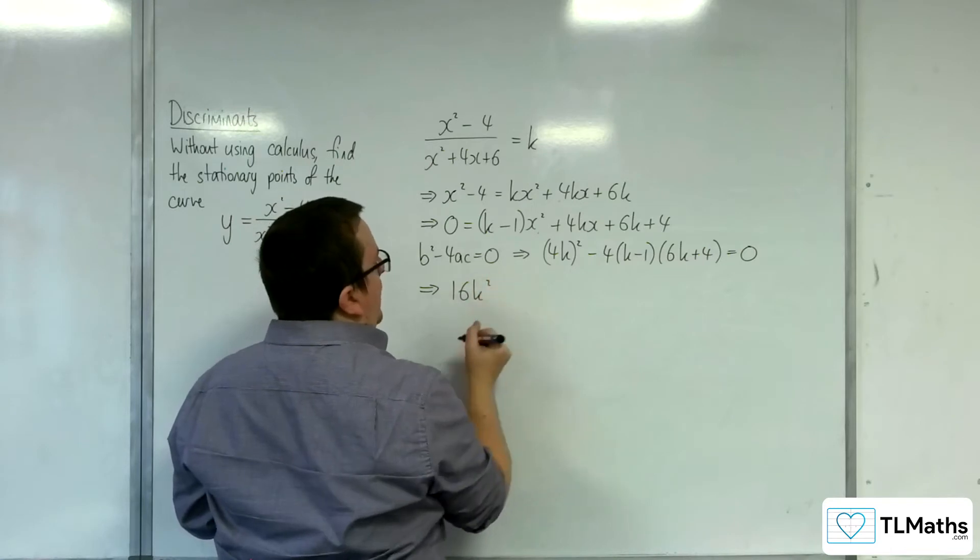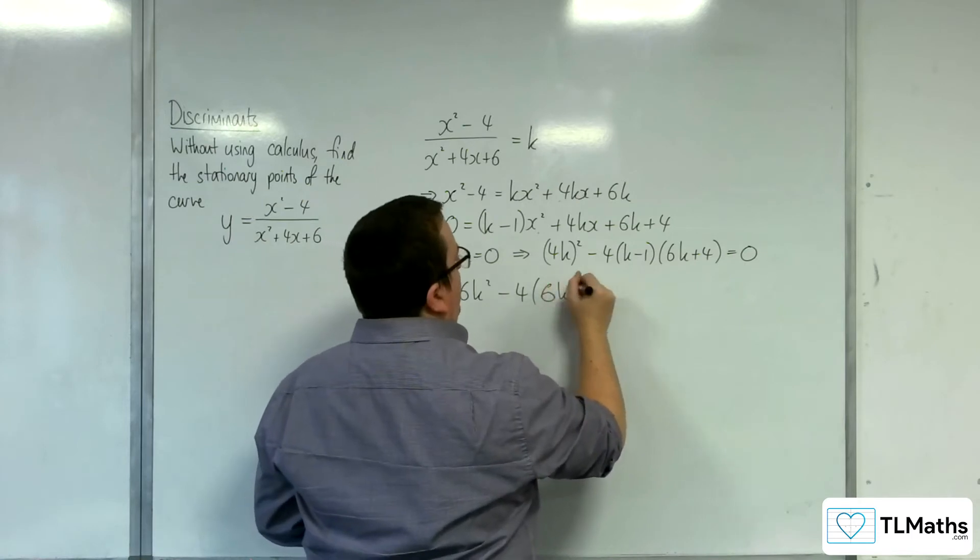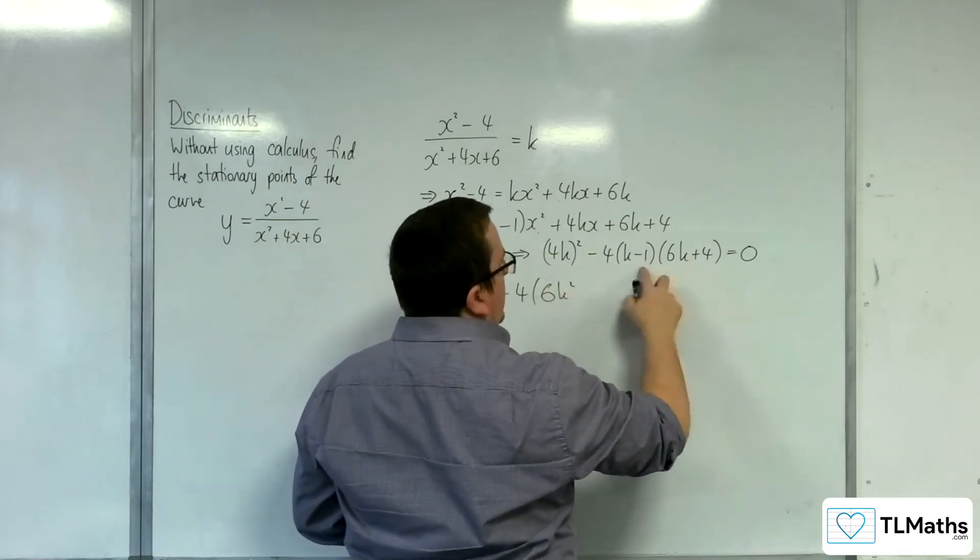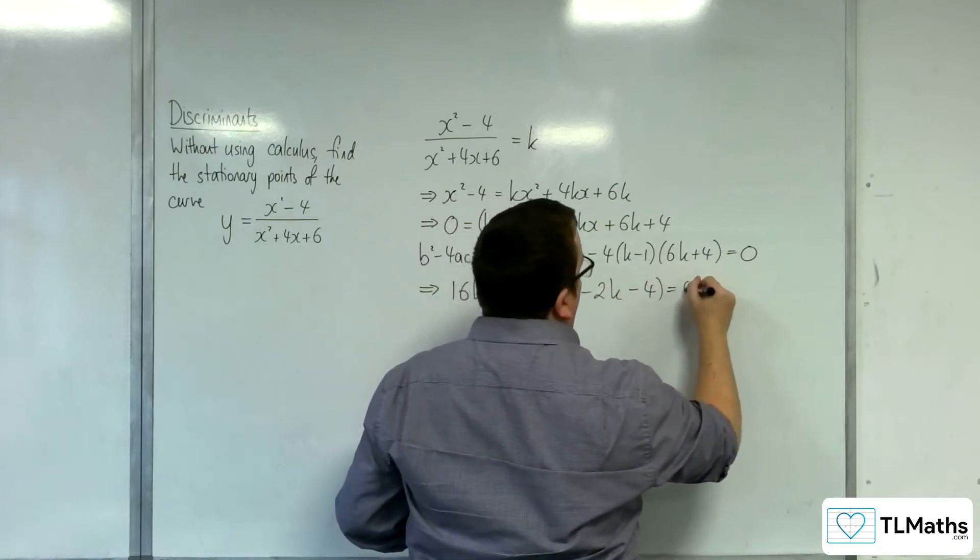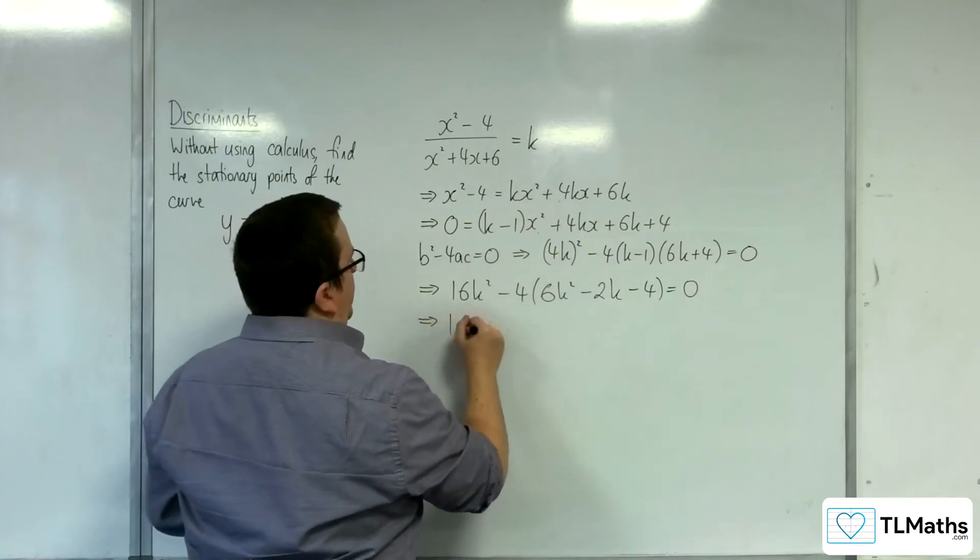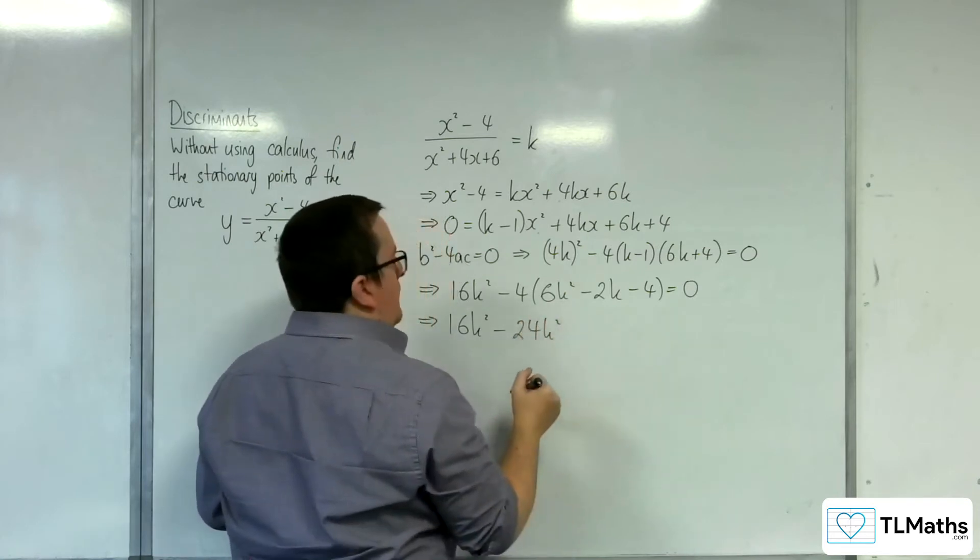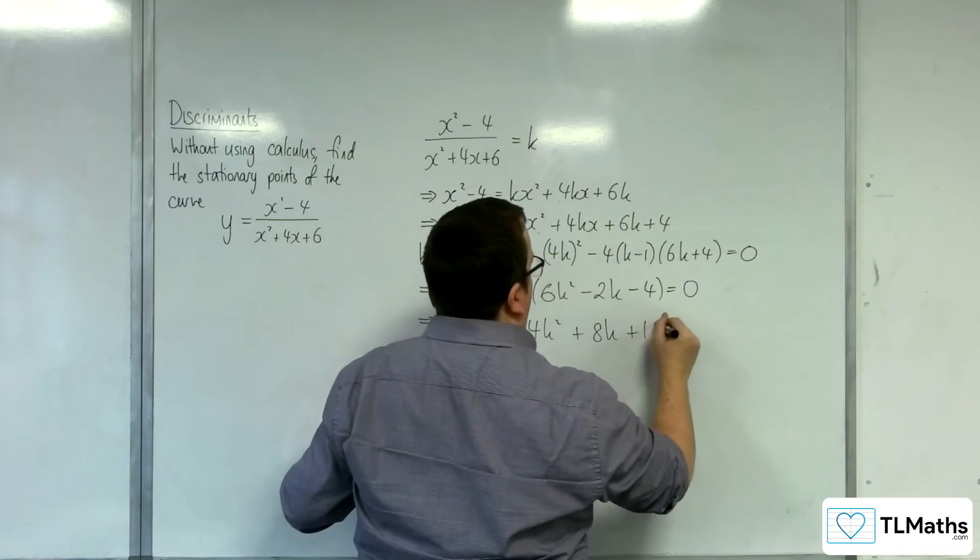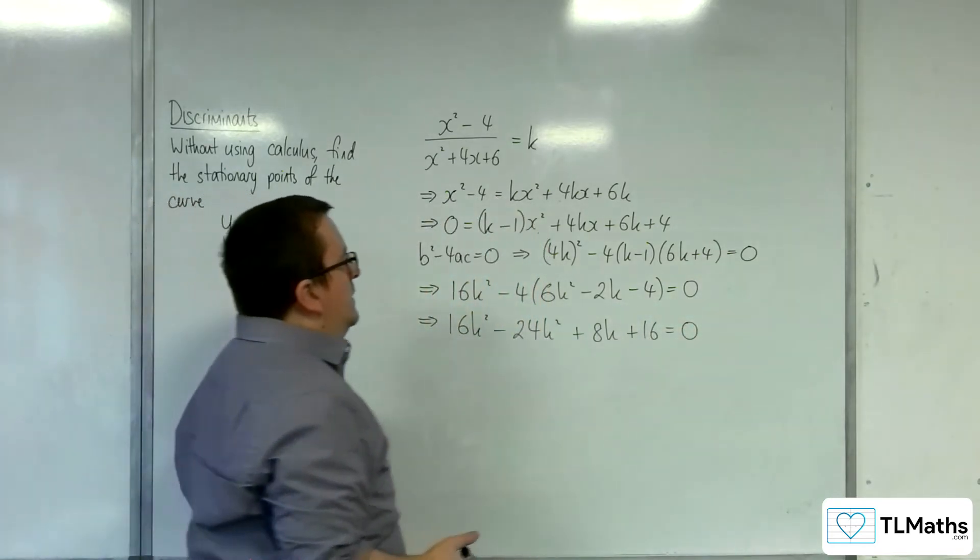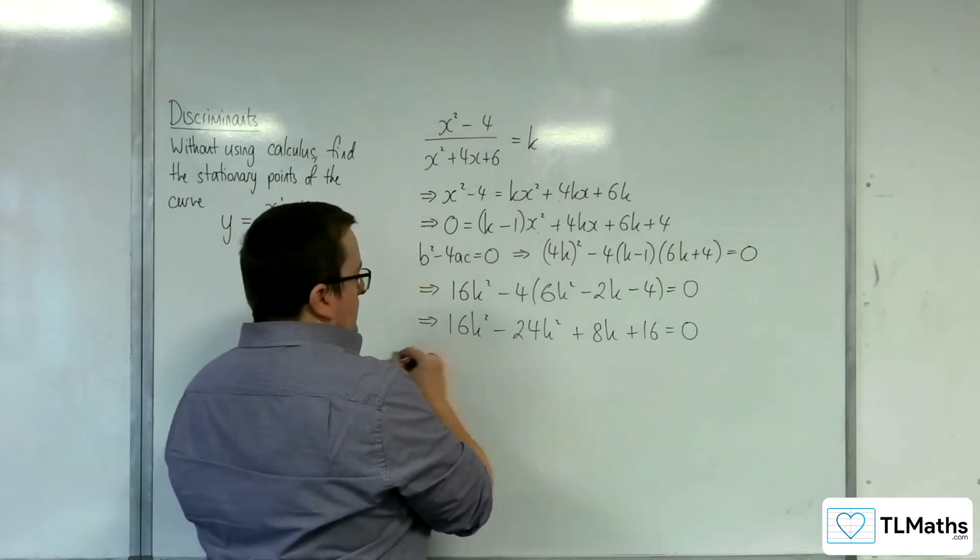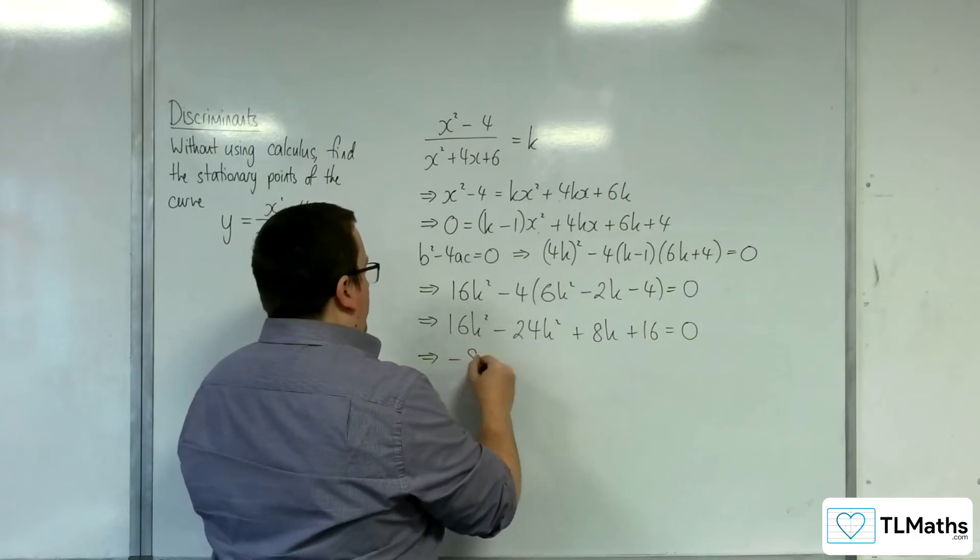So, 16k squared take away 24k squared plus 8k plus 16 equals 0. I could have divided through by 4 actually there. That probably would have been quicker, but I'll keep going this way. So 16k squared, take away 24k squared is minus 8k squared.